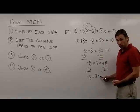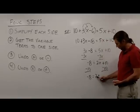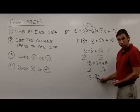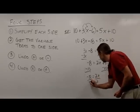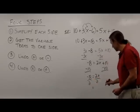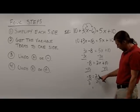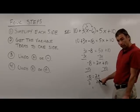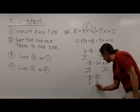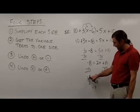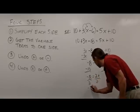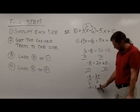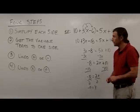Getting much closer to solving this equation now. Notice I just have this last thing to do, which is to undo the multiplication of 2. So I'm going to divide both sides by 2. Over here, 2 divided by 2 is 1, so I'm left with just x. On the left side, negative 18 divided by 2 gives me negative 9. I've solved the equation: x equals negative 9.